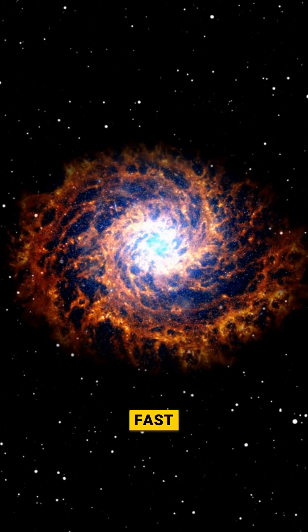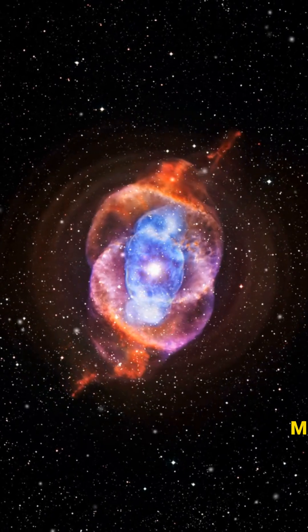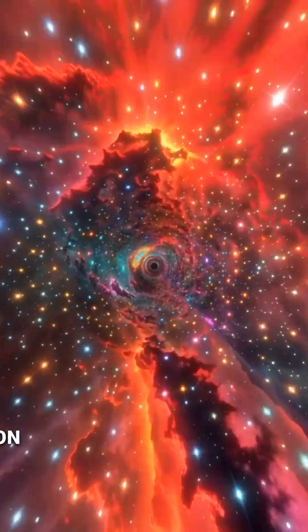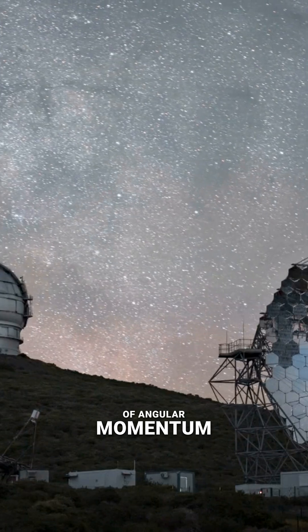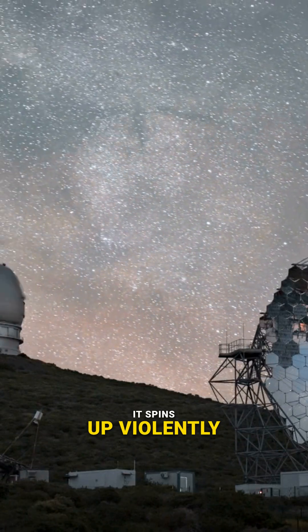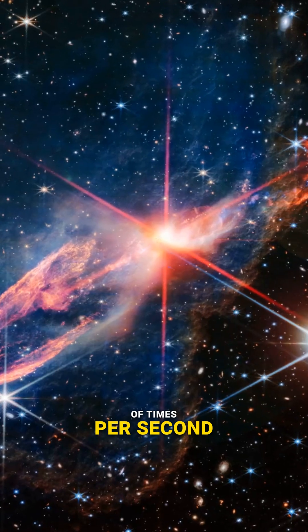They are born incredibly fast. As the core collapses from a massive star down to a tiny city, it obeys the law of conservation of angular momentum. It spins up violently. It can rotate up to hundreds of times per second.